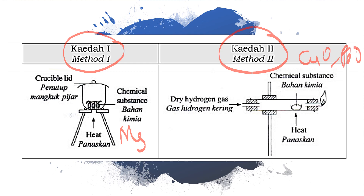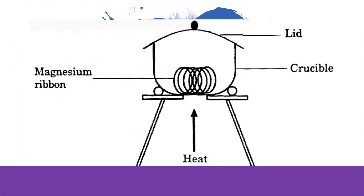So we will see these two experiments to determine the empirical formula. The first experiment is to determine the empirical formula of magnesium oxide. We use magnesium ribbon. Magnesium is a reactive metal, so we use method one.